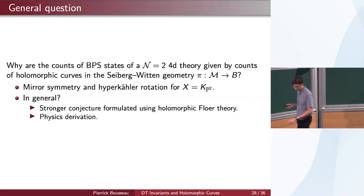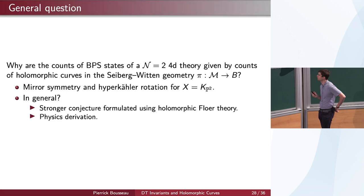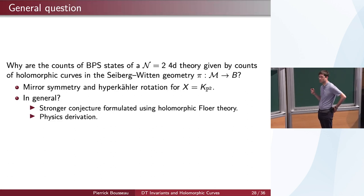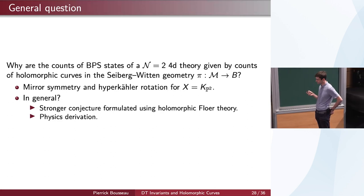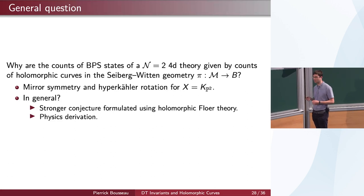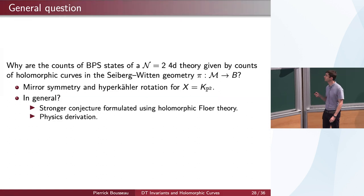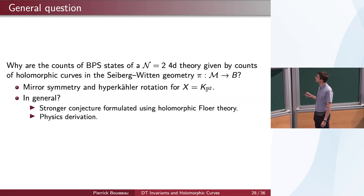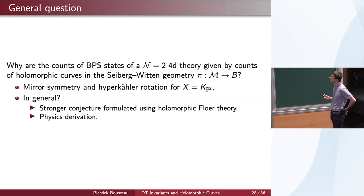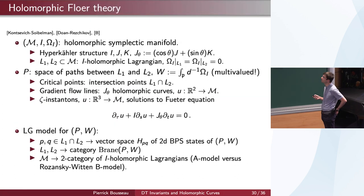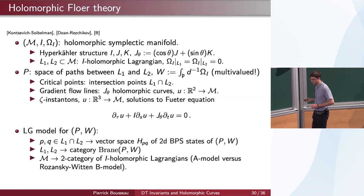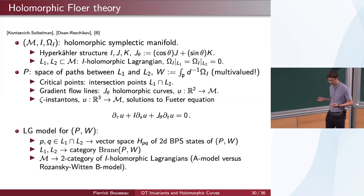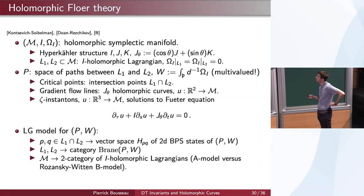I will end with a few more speculative slides, which are about the more general picture, not necessarily for local P². You could ask more generally why you would expect such a connection between DT invariants coming from geometric objects on a Calabi-Yau threefold on one hand, and holomorphic curves in this Seiberg-Witten geometry on the other. I will end with some kind of physics-like explanation using the setting of holomorphic Floer theory. You already heard from the Kontsevich-Soibelman talk something about holomorphic Floer theory, because it's the proper context for resurgence and related phenomena.